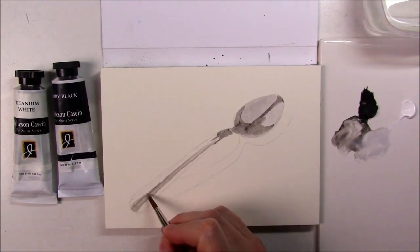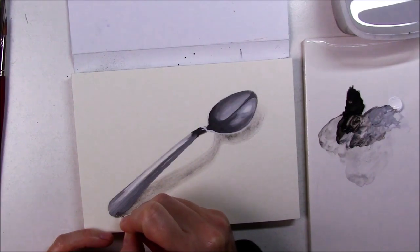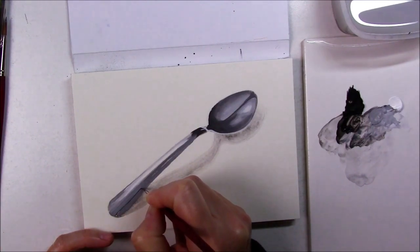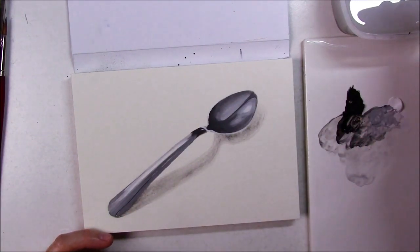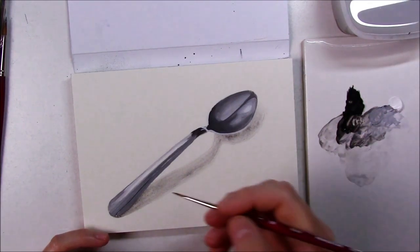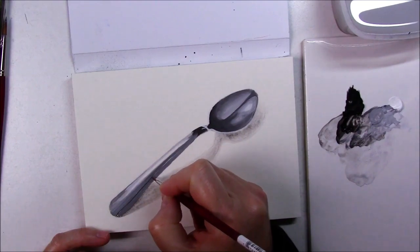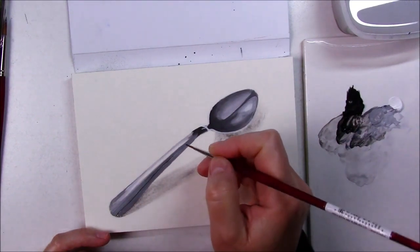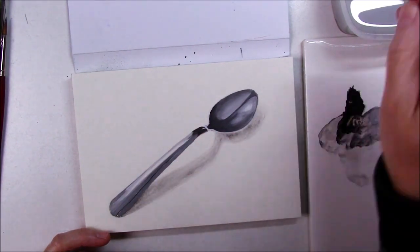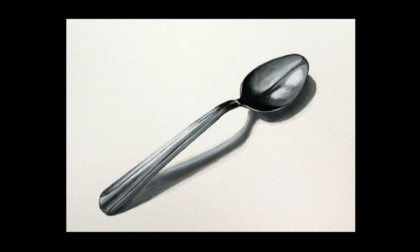And by the time the class is over, you will have a finished monochromatic painting of a shiny spoon. Once the class is over, I invite you to share your painting with everyone and talk about your experience with this medium. If you liked it, will you keep using it, really anything you want to share. I hope you will have a lot of fun taking this class and I will see you then!